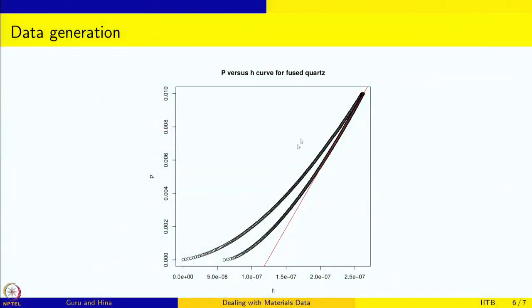This is how the load versus depth curve looks. This is the loading part, then it is held for a while, and then it is unloaded. The peak load and the depth at peak load are marked. We are going to fit the unloading part to a straight line, starting slightly below the maximum — we come a little bit down, take that data, and do the fitting. The intercept of that slope line gives the depth.